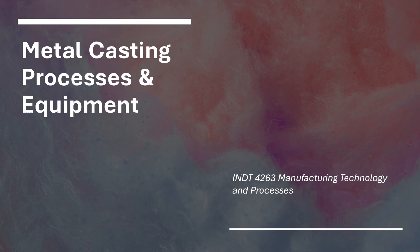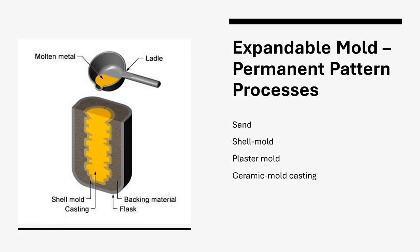This is Chapter 11: Metal Casting Processes and Equipment — a keynote lecture for your review. When we look at expandable mold and permanent pattern processes, they include sand, shell mold, plaster mold, and ceramic mold casting.